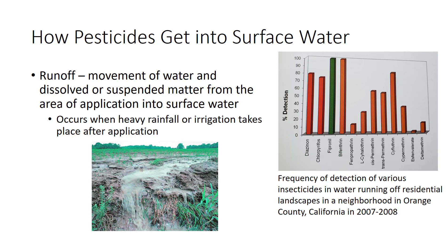The bar graph shows the frequency of detection of various insecticides in water running off residential landscapes in a neighborhood in Orange County, California, in 2007 to 2008. Pesticides such as fipronil and bifenthrin were detected almost 100% of the time, often at levels toxic to aquatic invertebrates. There are several ways to prevent runoff: diligently monitoring and reducing water flow to prevent overflows into the drainage system, choosing pesticides that are less likely to move or persist in water, using buffer strips between the crop and the water source to trap pesticides and sediment, and always having a shutoff device to stop pesticides from being injected into the system when irrigation stops.